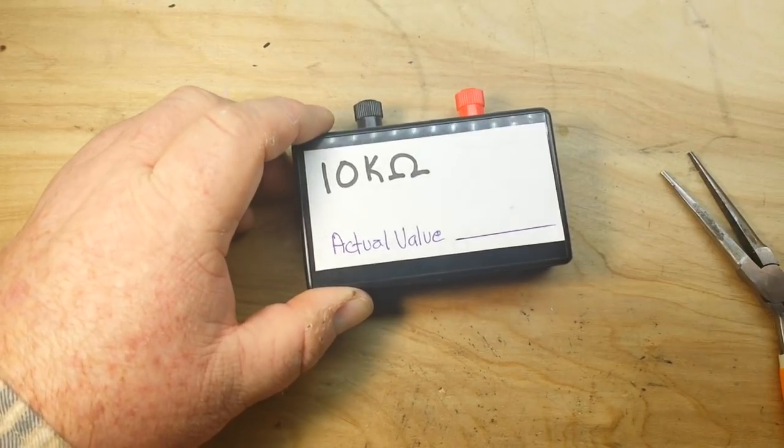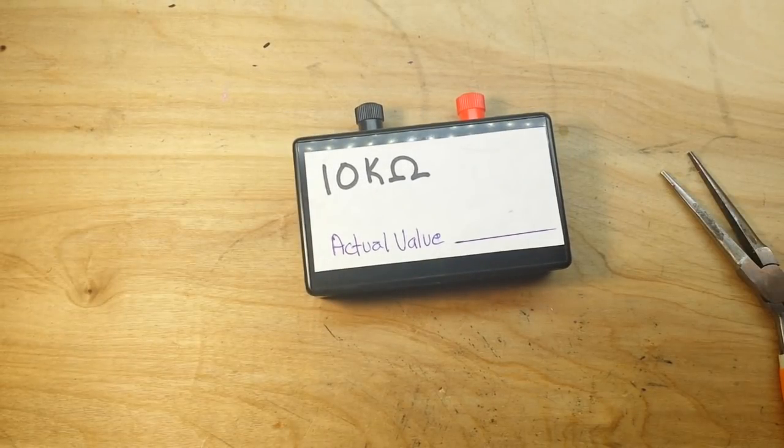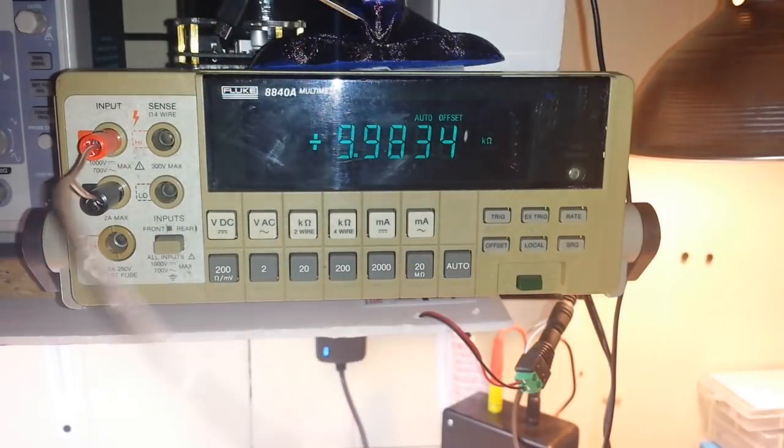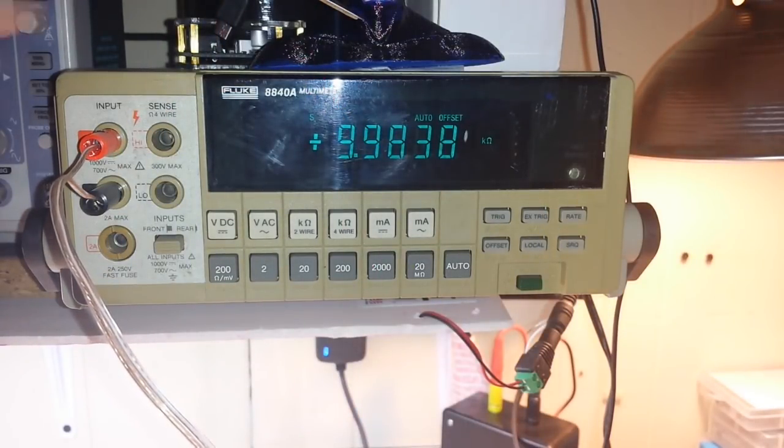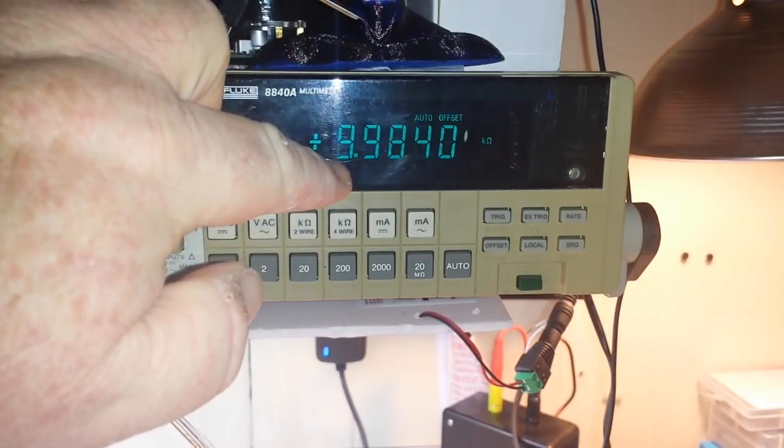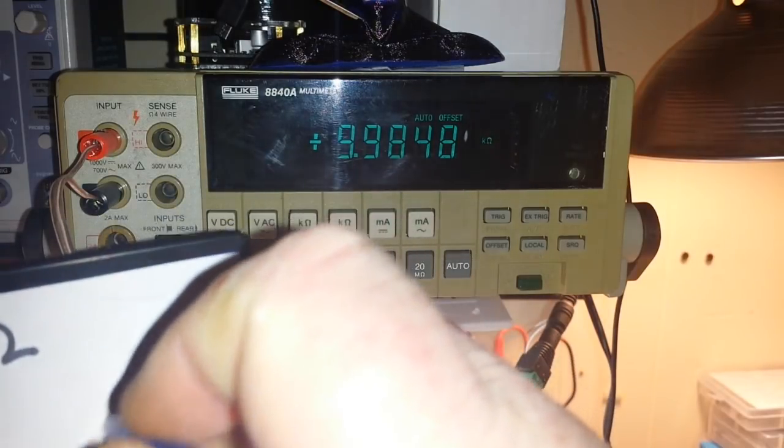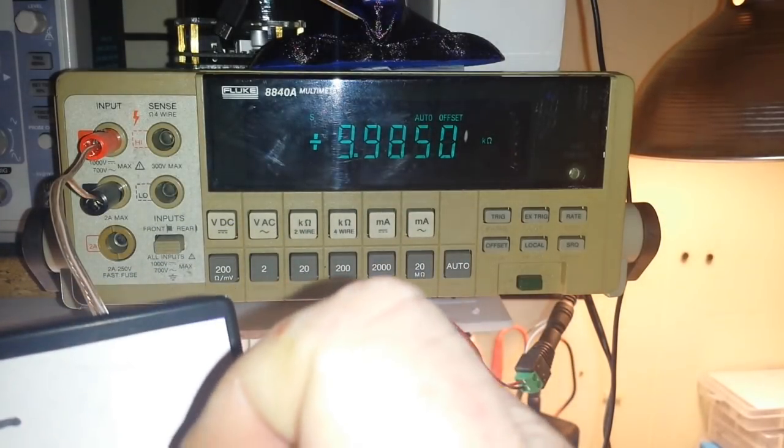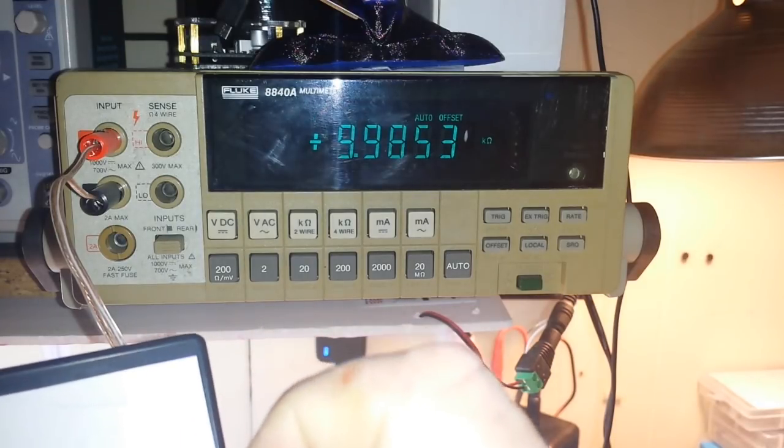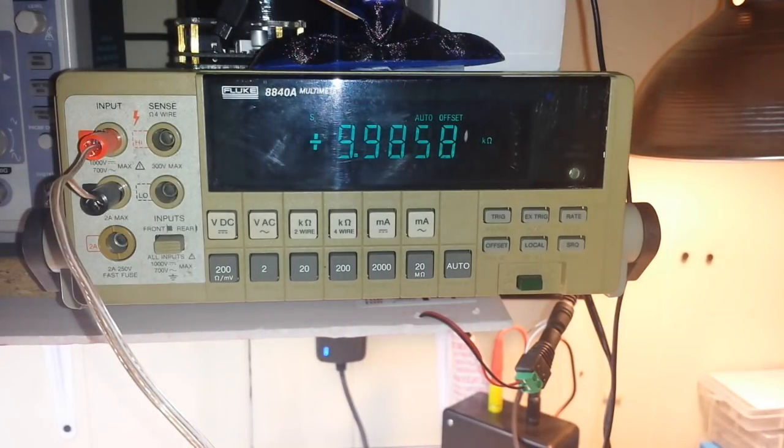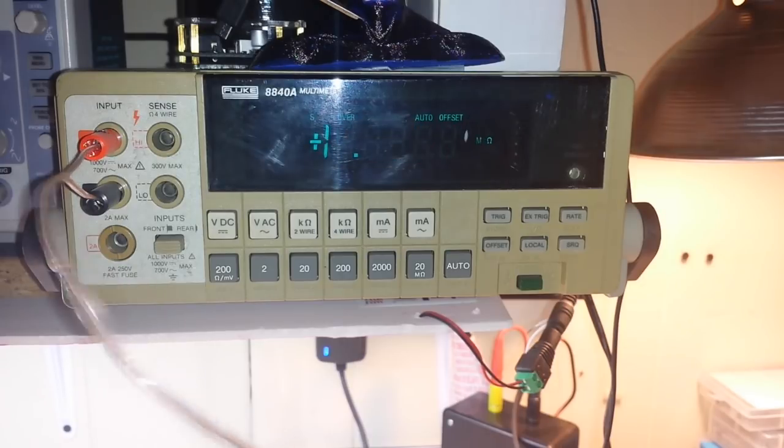So then we can put on our cover and we'll take a final measurement. Everything is hooked up, I've zeroed out the readings, and we get 9.984. So we will write that on here: 9.984. We'll call it 9.985. And that is our homebrewed resistance standard. Boom.